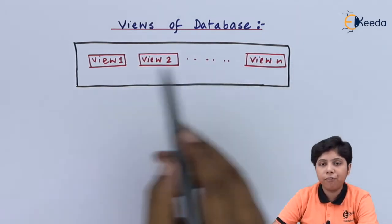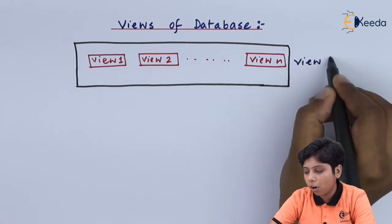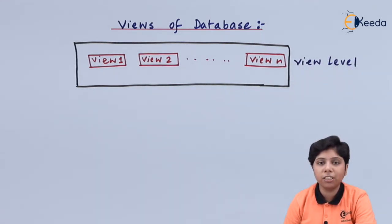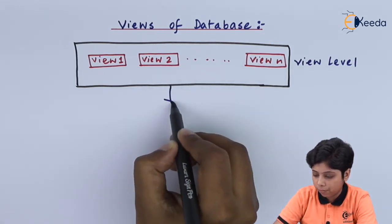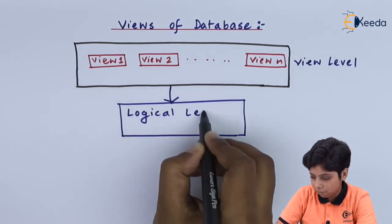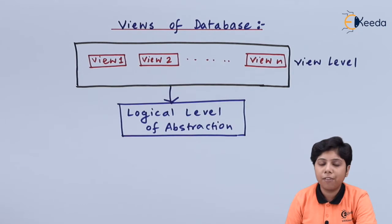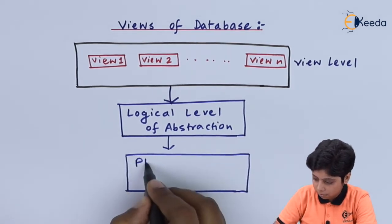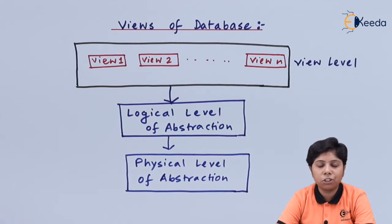The view level is the outermost level and contains many views depending on use — it is what the user actually sees. Related to this is the logical level of abstraction, and the innermost level is the physical level of abstraction. This is all about the data abstraction of views of a data.